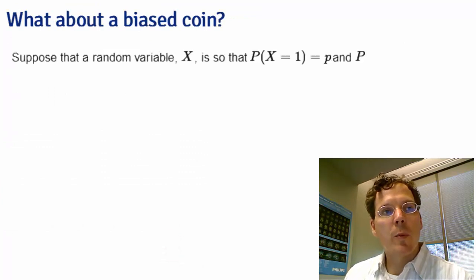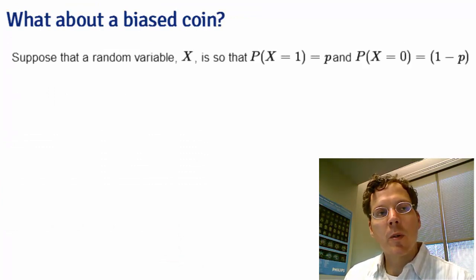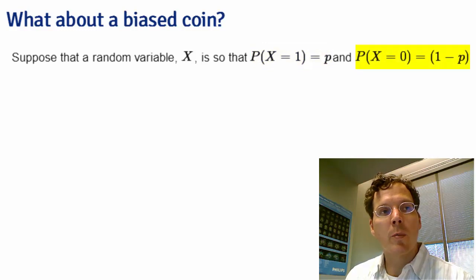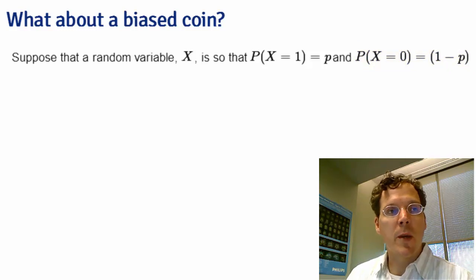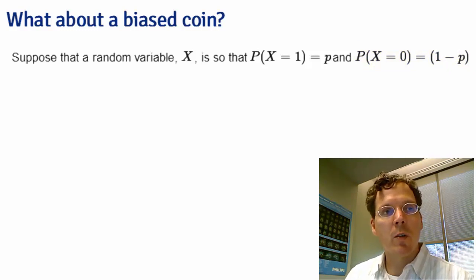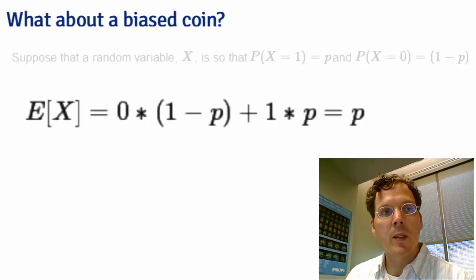Suppose that a random variable x is such that the probability that it takes the value 1 is p and the probability that it takes the value 0 is 1 minus p. This is a biased coin where the probability of a head is not necessarily 0.5. The probability of a head now is p. What is its expected value? Plugging directly into the formula, 0 times 1 minus p plus 1 times p, which works out to be p.